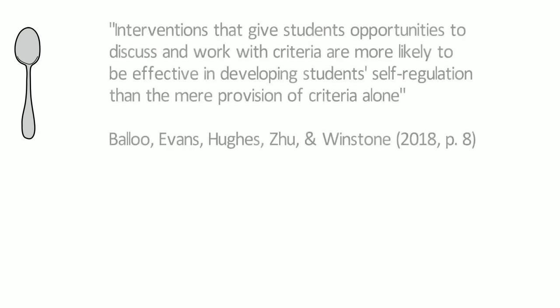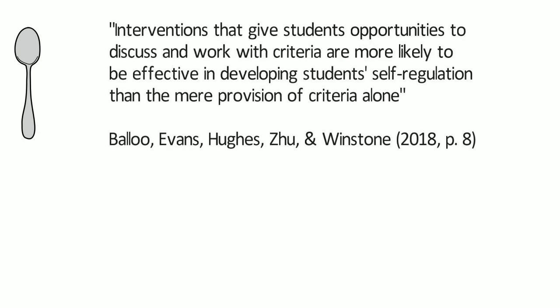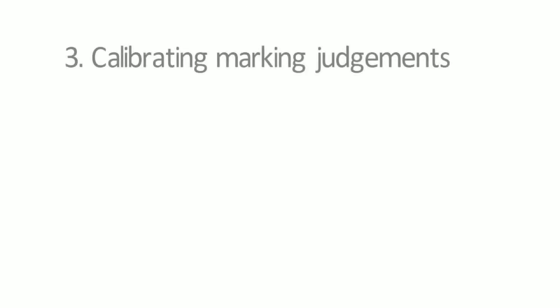A common concern with these types of activities is that they represent spoon feeding — telling students what they need to produce at each level. What evaluative judgment is doing is actually helping students to take the perspective of a marker rather than telling them exactly what they need to do. This develops student self-regulation, which improves their capacity to generate feedback from themselves, not being so reliant on others to provide it for them.